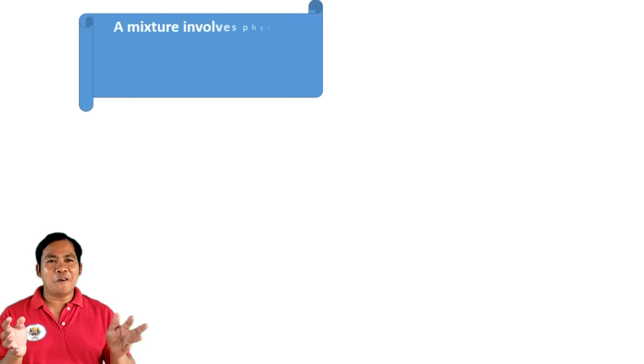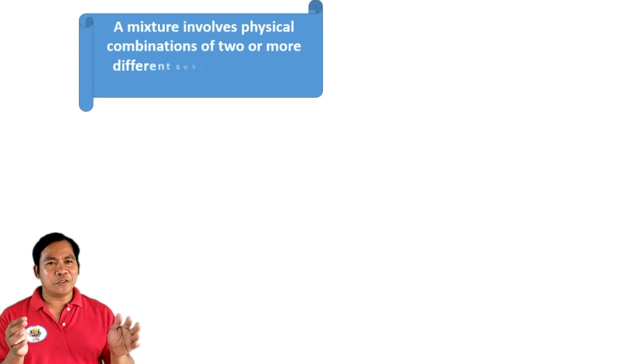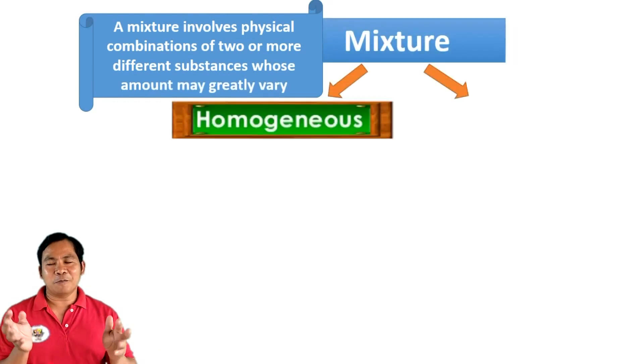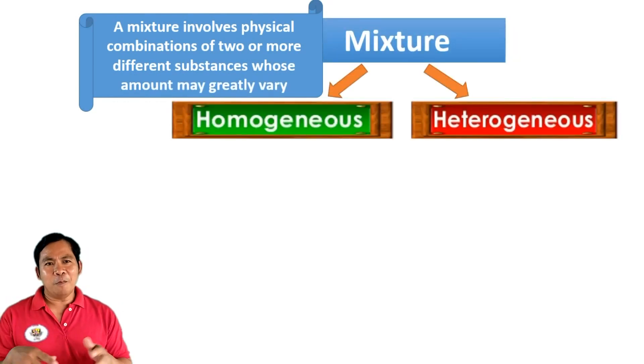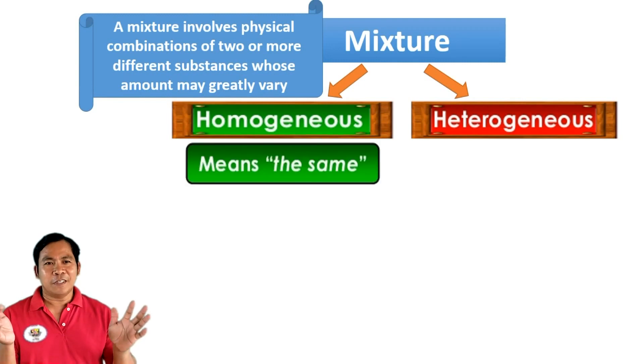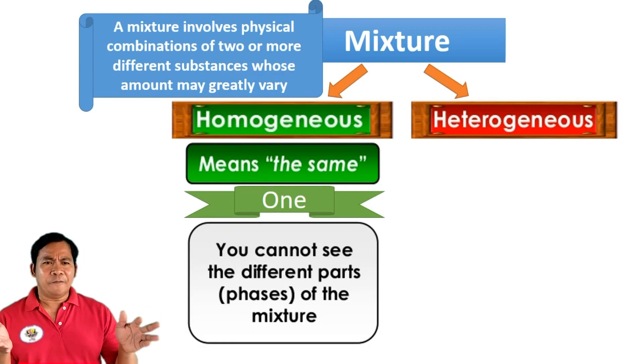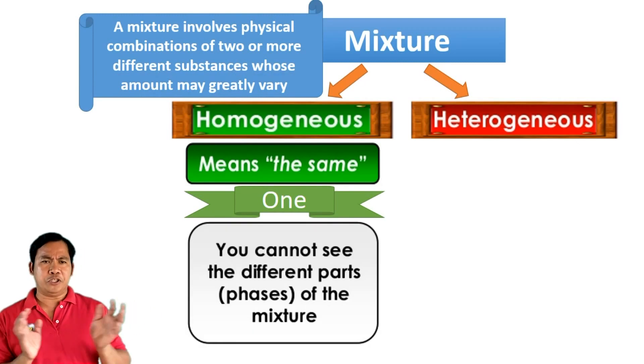A mixture involves physical combinations of two or more different substances whose amounts may greatly vary. Homogeneous means the same or means one. You can see one face. Therefore, you cannot see the different parts of the mixture.